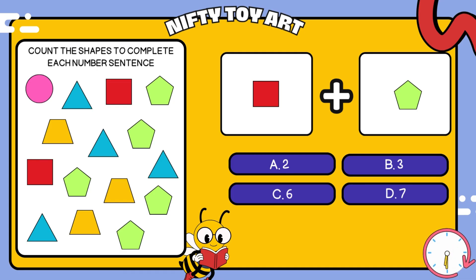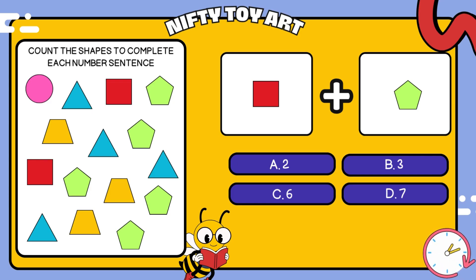I have a square plus pentagon. How many all together? That's right, seven.